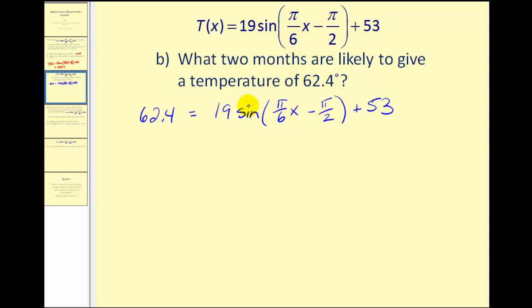Let's isolate the sine function. We'll subtract fifty-three on both sides, which gives us nine point four. Now we'll divide by nineteen. This comes out to approximately point four nine four seven.